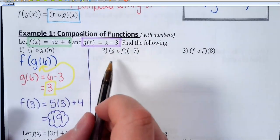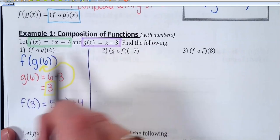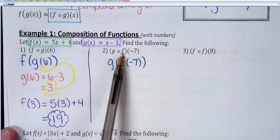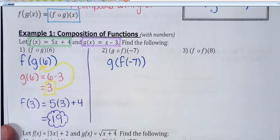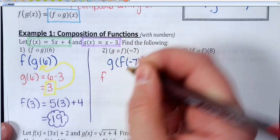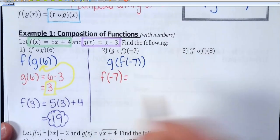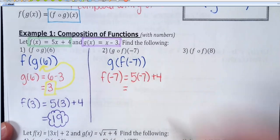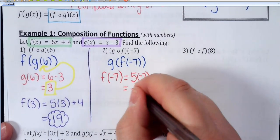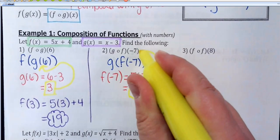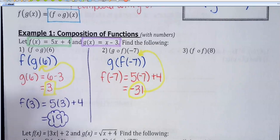This next one is different than the first question. This one is g of f of negative 7. With the circle notation, whatever's closer to the number goes first. So I'm going to plug negative 7 into the f of x function first. Working from the inside out, the f of x function rule gets used first. We plug in negative 7: 5 times negative 7 plus 4 gives us negative 35 plus 4, which is negative 31. That's the first problem.